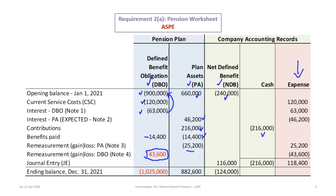What's the same is the current service costs of 120,000, the interest on the DBO of 63,000, and the expected interest on the plan assets of 46,200. Those three things are the same.